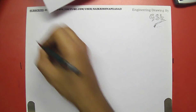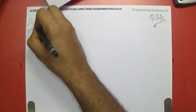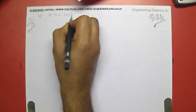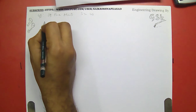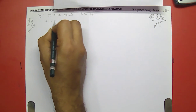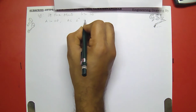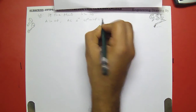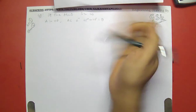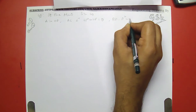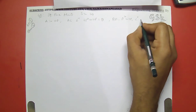Let us write down the given data. This is Set 3, Question 5. Given data: square plane lamina ABCD, side is 40 mm, A is in the HP, diagonal AC is inclined at 45 degrees to the HP (this is theta), and diagonal BD is parallel to HP with inclination 30 degrees to the VP.